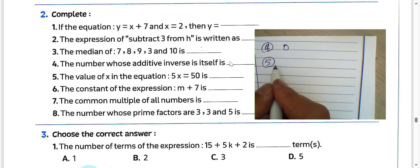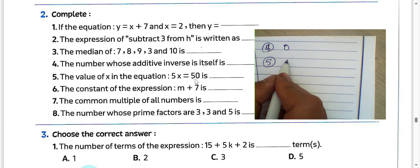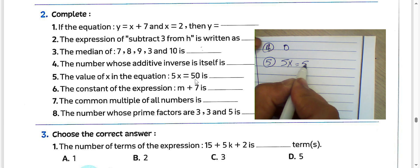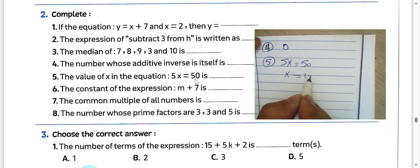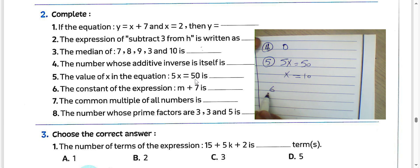Question number 5: the value of X in the equation 5X equals 50. We can divide by 5, and the value of X will be 10.